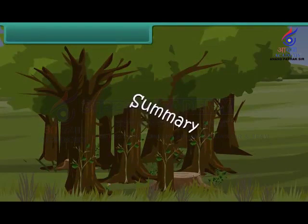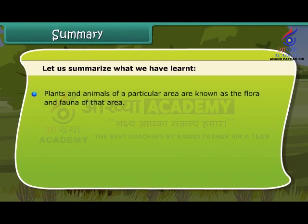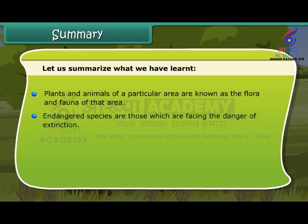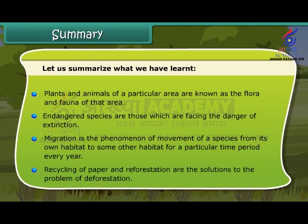Let us summarize what we have learned. Plants and animals of a particular area are known as the flora and fauna of that area. Endangered species are those which are facing the danger of extinction. Migration is the movement of a species from its own habitat to another for a particular time period every year. Recycling of paper and reforestation are the solutions to the problem of deforestation.